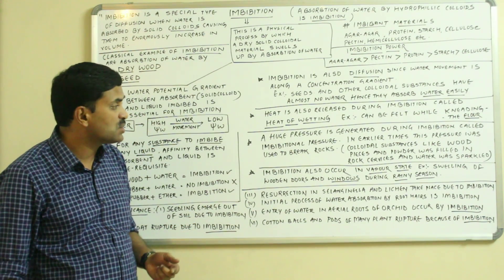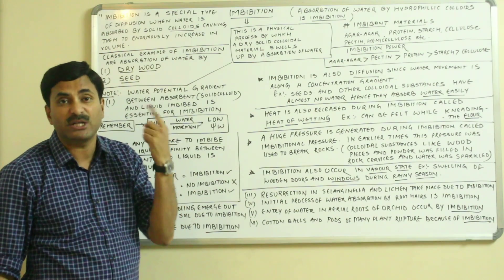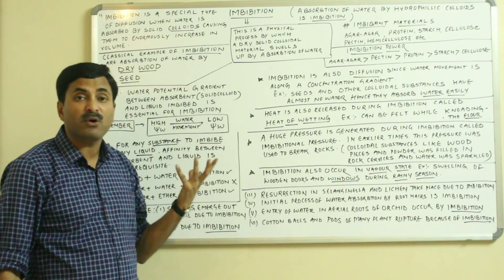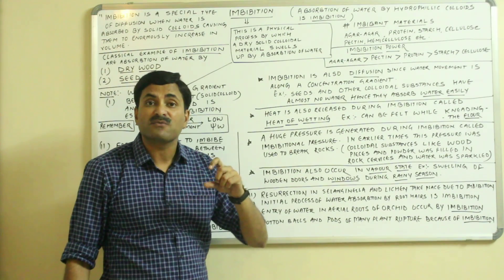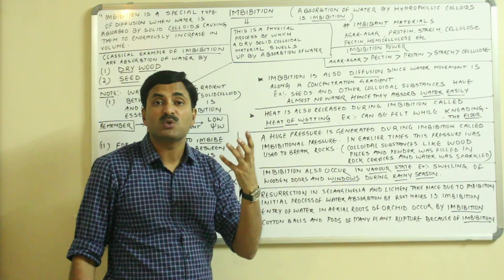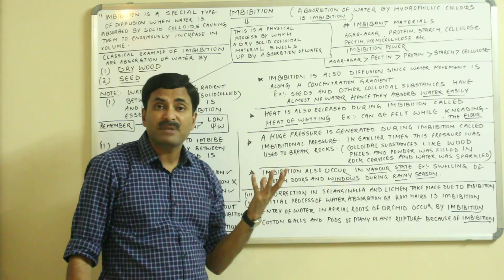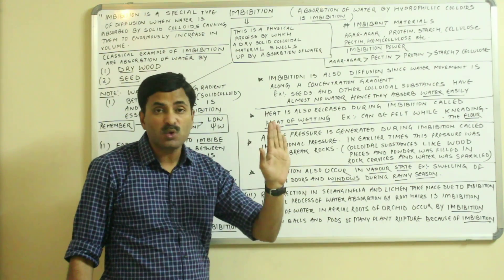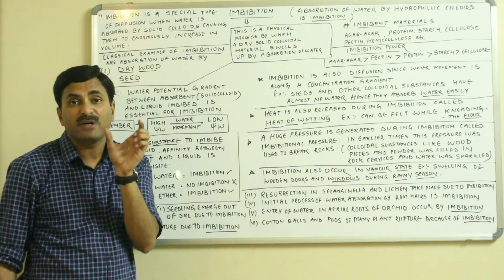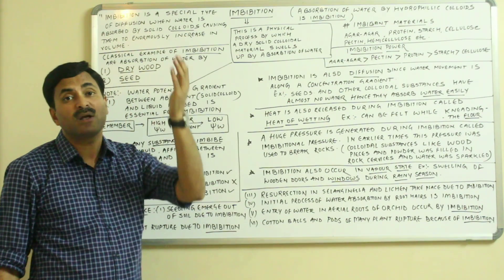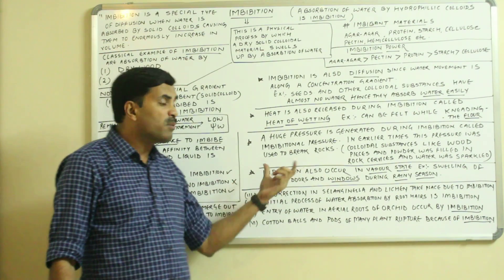Imbibition does not only occur in the liquid stage — it also occurs in the vapor state. For example, you can see the swelling of wooden doors and windows during the rainy season. In places with heavy rainfall, wooden doors and windows remain in an imbibed state throughout the rainy season. If closed, they become very tough to open because the wood absorbs water vapor from the environment and swells — this is also a process of imbibition.